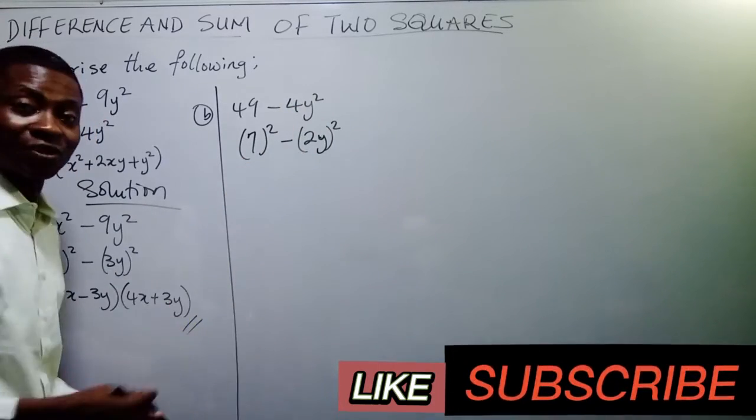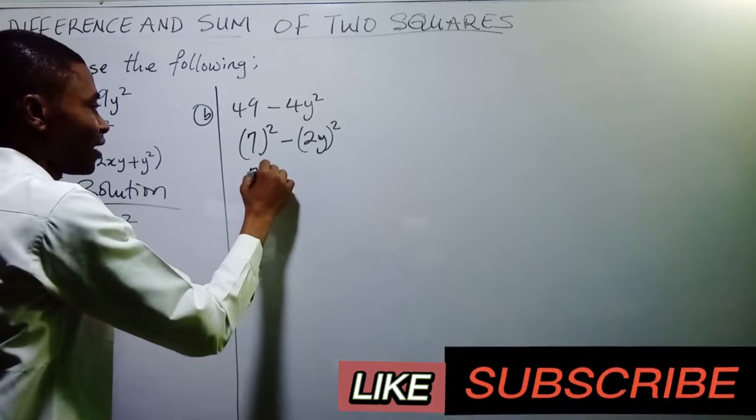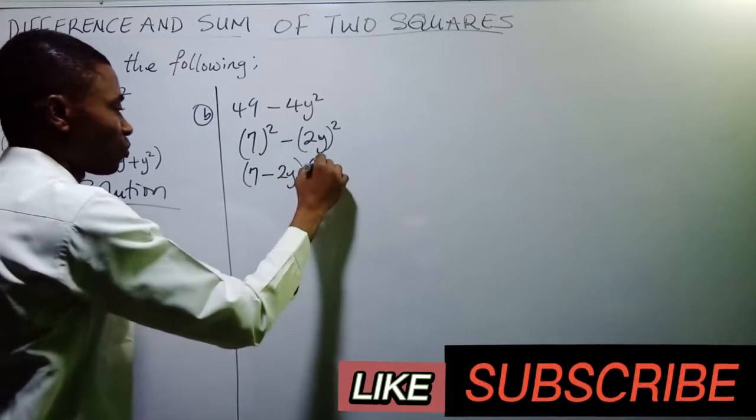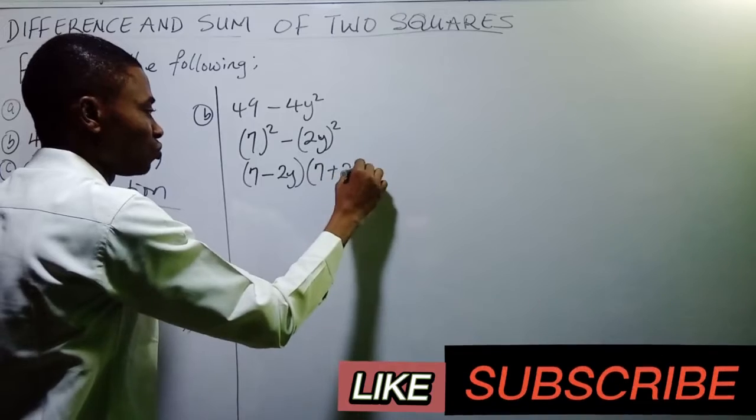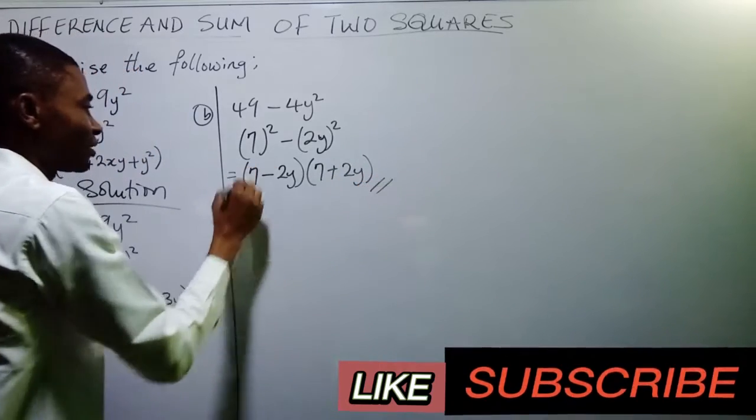Again, this is applying difference of two squares. This is saying 7 minus 2y, open bracket, 7 plus 2y. And that is our answer.